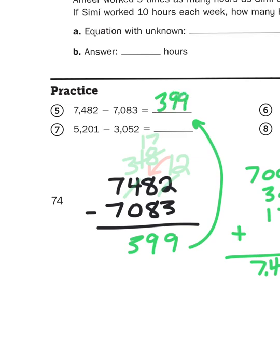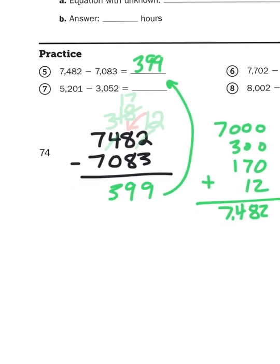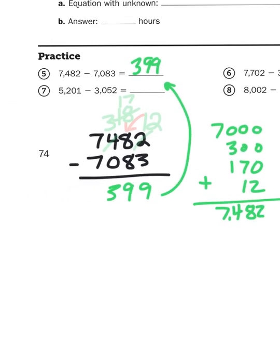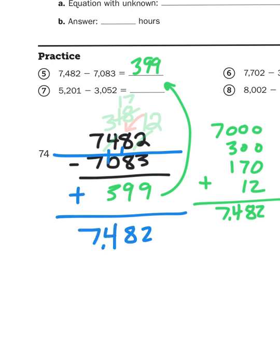Now again, if I wasn't sure if that was true, what I could do is just turn that problem around into an addition problem. I would take this bottom number here, 7,083, add it to 399, and see if I get my original number. Well, 3 plus 9 is 12. I'll carry that 1. 1 plus 8 is 9, 9 plus 9 is 18. And we're looking pretty good right here. Yep, it works.